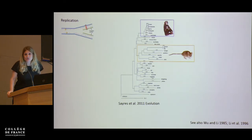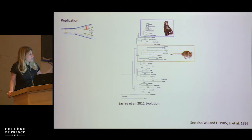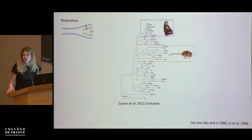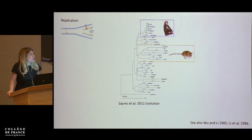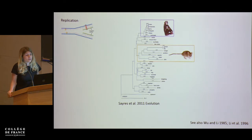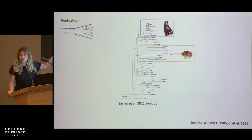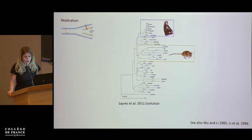One line of evidence is the so-called generation time effect, first observed in evolutionary biology in the 1980s. Here's a more recent plot from Melissa Wilson-Sera's PhD work: species that are more short-lived evolve more rapidly than species that are longer-lived. For example, this is a phylogeny in which branch lengths reflect the number of substitutions, and you can see that rodents have accumulated more substitutions per unit time than have primates.